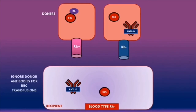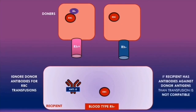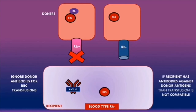Applying the principles again — ignoring donor antibodies — if this sensitized rhesus negative recipient receives rhesus positive blood, the transfusion is not compatible because the recipient's anti-D antibodies will attack the donor's red blood cells and can cause a hemolytic transfusion reaction. Importantly, the hemolytic transfusion reaction from rhesus incompatibility is usually much less severe than from ABO incompatibility. This is why in emergency situations where only rhesus positive blood is available, it may still be given to rhesus negative patients, as the reaction will usually not be too severe.